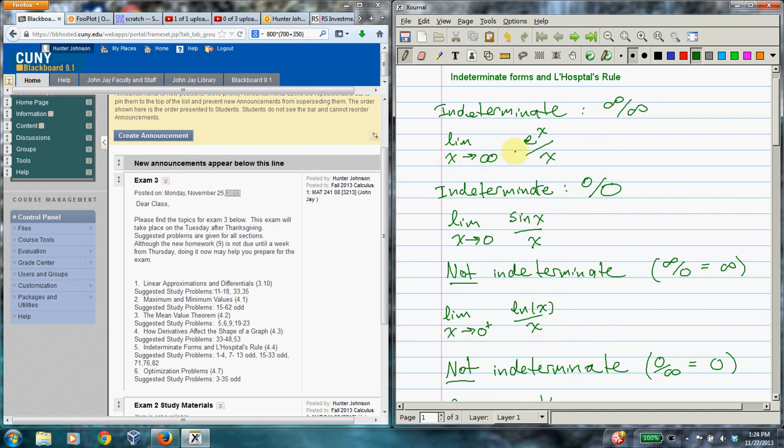So I have an example of each type here. As x goes to infinity, e to the x gets bigger and bigger, so it goes to infinity. And also, obviously, x goes to infinity as x goes to infinity. So you have infinity over infinity. So this is a case where you can use L'Hopital's Rule. L'Hopital's Rule basically says that you can replace each function here with its derivative. So you can replace both the numerator with its derivative and the denominator with its derivative, and the limit will stay the same.